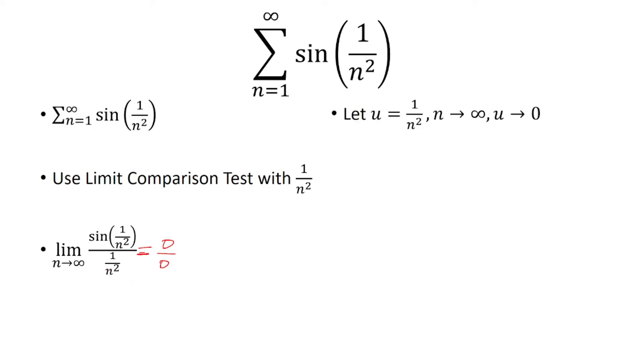So let's let u equal 1 over n squared. So as n approaches infinity, 1 over n squared approaches 0. So in other words, u will approach 0.